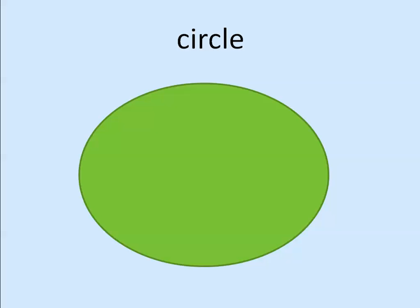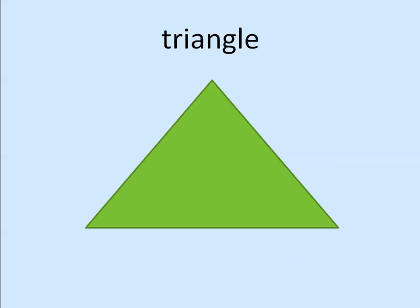Let's see the other shape. What do we have? This is a triangle. Say: triangle. Very good! Okay, let's sing the song for the triangle: 'It's a triangle, it's a triangle, how can you tell, how can you tell? It has three sides, it has three sides — one, two, three, one, two, three!' Very good!